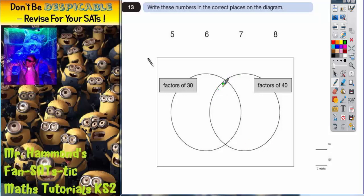The crucial bit is the bit in the middle where the two circles overlap. So any numbers which are factors of 30 and at the same time also factors of 40 have to go in the overlapping bit.